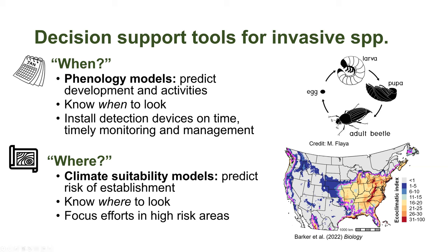Forecasting tools that address where to find an invasive species are also very important. Climate suitability models predict the risk of establishment of an invasive species across a given area, so we know where to look and can focus resources on areas at highest risk. I'm showing here a climate suitability model published last year for an invasive fungal pathogen that causes boxwood blight disease, spreading in the contiguous United States — CONUS. Areas with warm colors are at highest risk of establishment, using the ecoclimatic index. Dark blue or gray areas are at low risk.